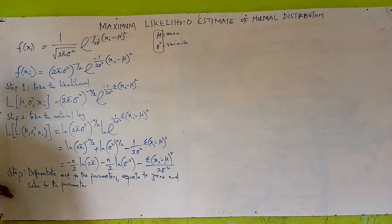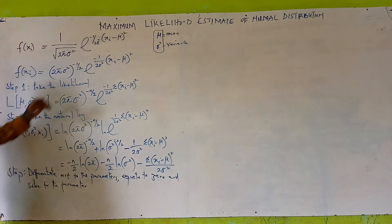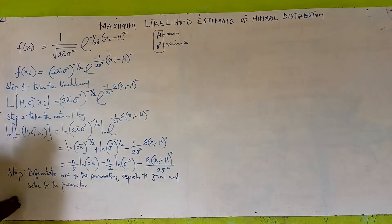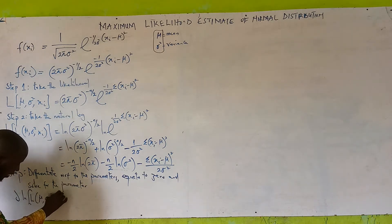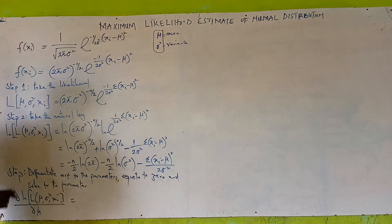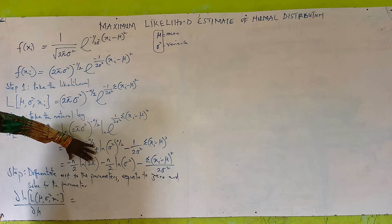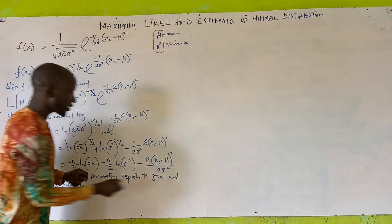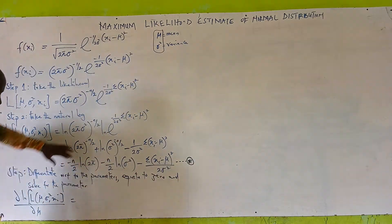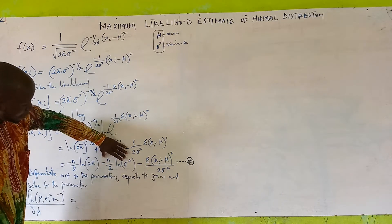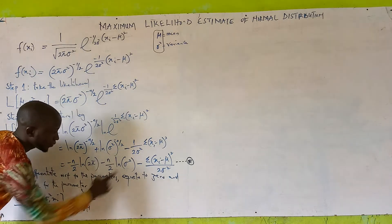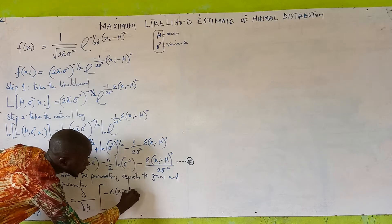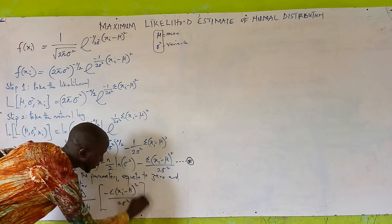First we differentiate with respect to the mean mu. The partial derivative of the log-likelihood with respect to mu. Looking at the terms: the first two terms have nothing to do with mu, so we differentiate only the last term. We get: 2 times summation of (x_i minus mu) divided by 2 sigma squared — since it is a composite function, differentiating gives us a factor of minus 1 which neutralizes the negative, and the 2 comes down.